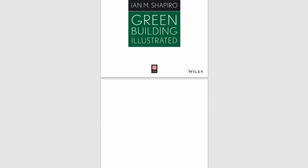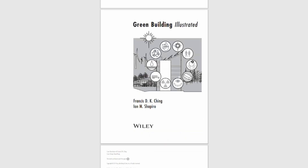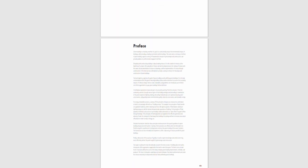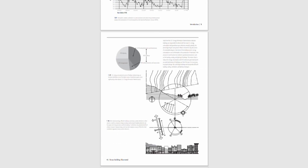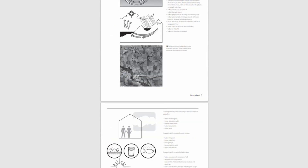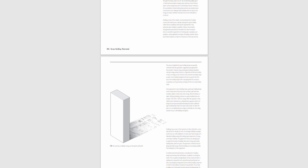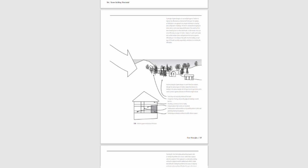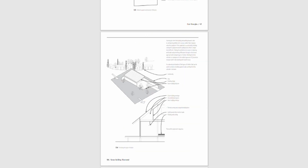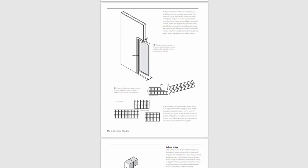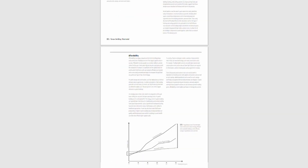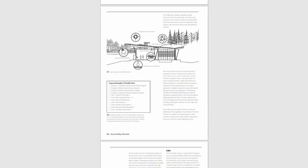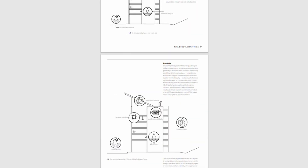The last two books — Green Building Illustrated and the Visual Dictionary of Architecture — are must-have books. Get them from your library if you can. The concepts in Green Building are extremely important, especially when designing in the modern day where we're always aiming to be as sustainable as possible. And you can never go wrong with having a dictionary around — the Visual Dictionary of Architecture helps you understand a lot of the different jargon and terms used in architecture.